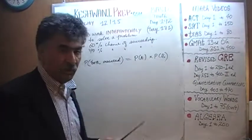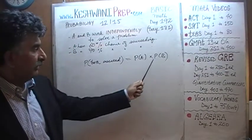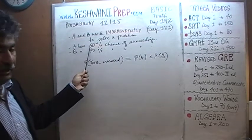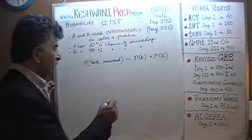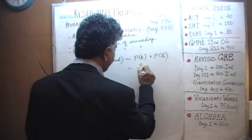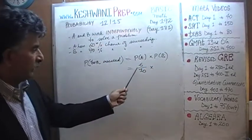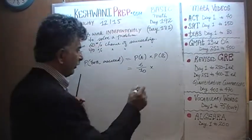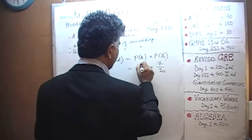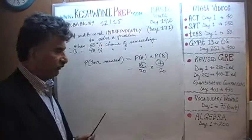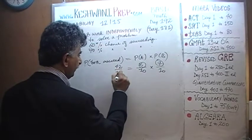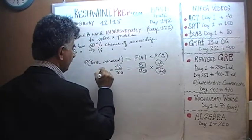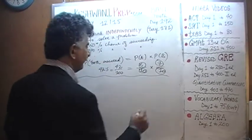The same thing is going on here. We simply multiply the odds of A happening with the odds of B happening, and that will tell us the odds that they will both succeed. A has a 60% chance, which we write as 6 over 10, and B has a 70% chance, which is 7 over 10. 6 times 7 is 42, so that's 42 over 100 — simply 42 percent.